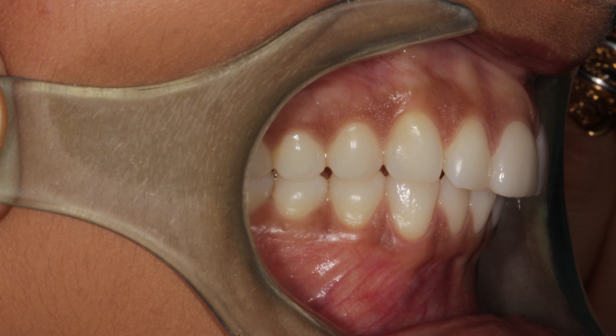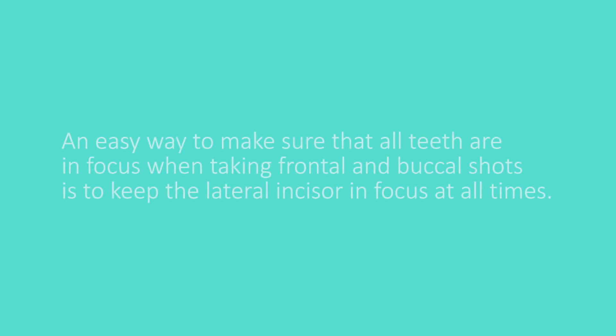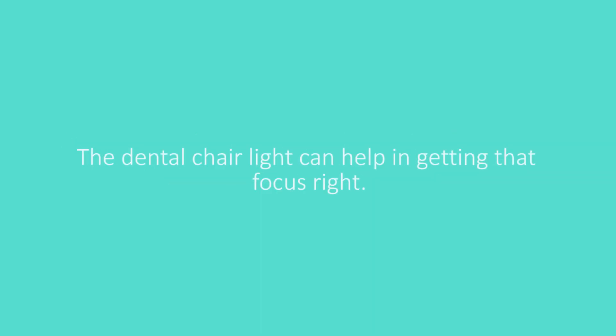Ideally, only the left central incisor from the left side can be shown from the right buccal shot. Repeat the same for the left side. An easy way to make sure that all teeth are in focus when taking frontal and buccal shots is to keep the lateral incisor in focus at all times. The dental chair light can help in getting that focus right.